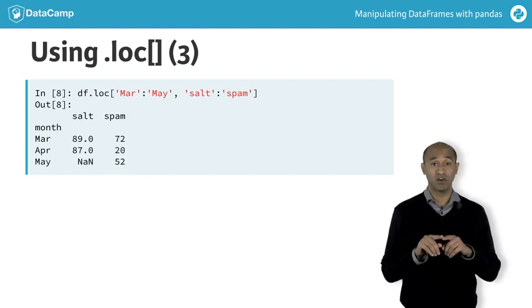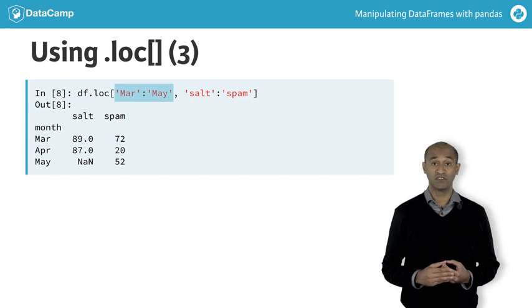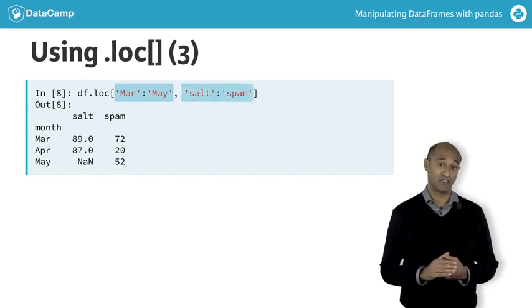This example extracts a block with a proper subset of rows and columns, from March to May inclusive and from salt to spam inclusive.